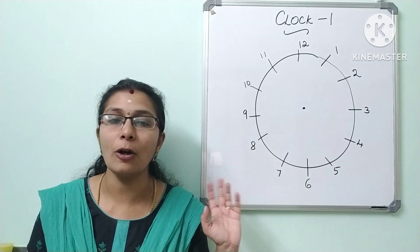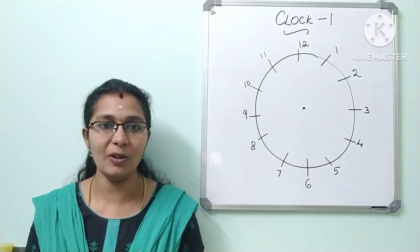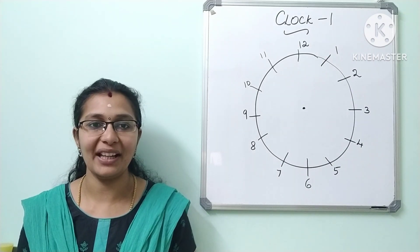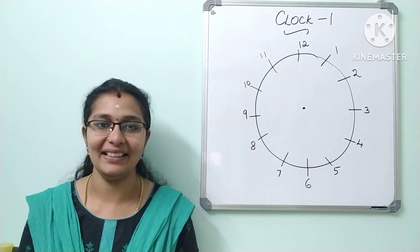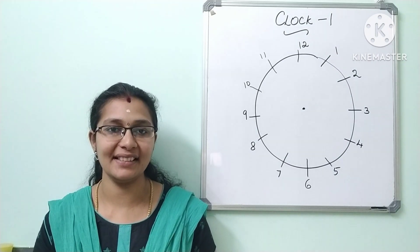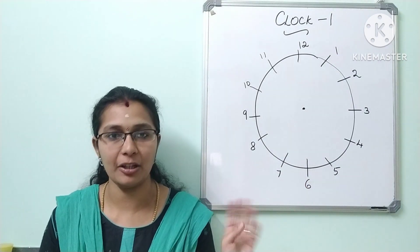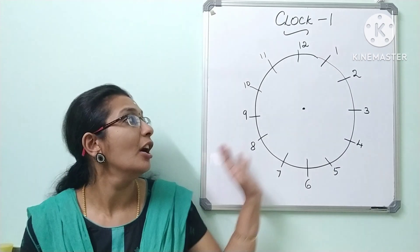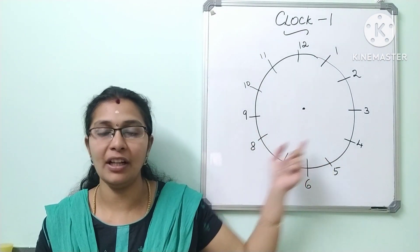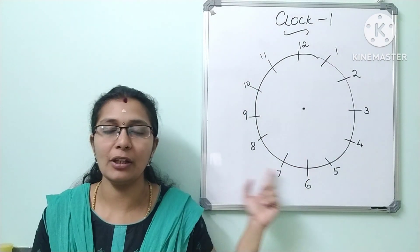Now we have to solve questions for the clock and basics. We will go directly to the concept. How do we start with basic clock questions? The clock has numbers 1 to 12.